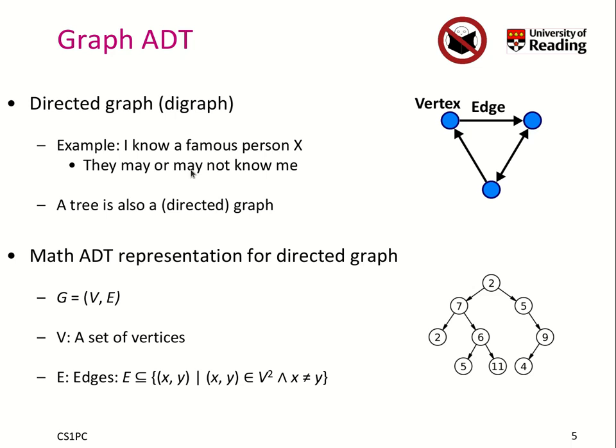We also have directed graphs. For example, you know a famous person X is such a typical relation. That doesn't mean that this famous person knows you.